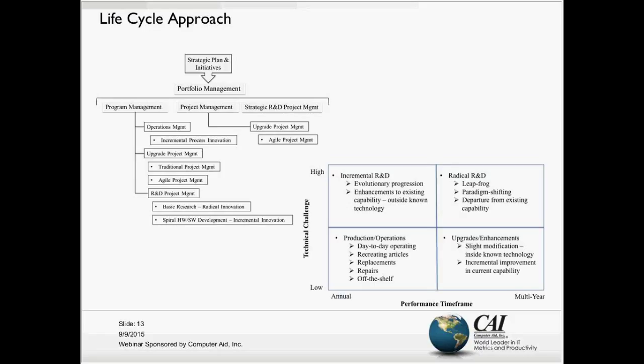The diagram on the left demonstrates a strategic plan and initiatives feeding into a portfolio of activities. Within that portfolio is a program, a project, and some strategic R&D. Traditionally, what we see in program management and project management at these levels is some defined methodology that applies very well to those. Your standard project management methodology will be used for your typical projects that fall into this. However, the R&D projects, as you see, are integrated, and yet people struggle with applying project management methodology to those activities.